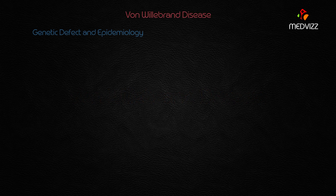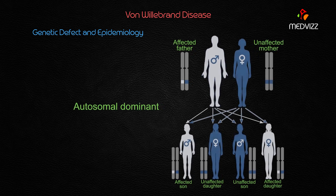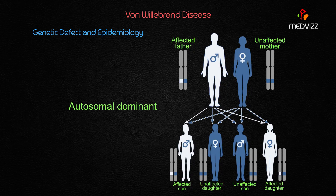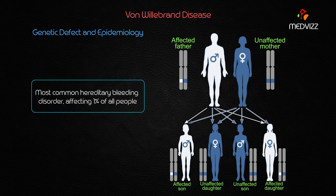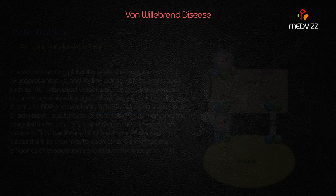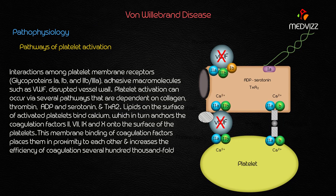Von Willebrand disease is an autosomal dominant disease marked by the deficiency of von Willebrand factor. It is the most common hereditary bleeding disorder, affecting 1% of all people, especially in the United States.